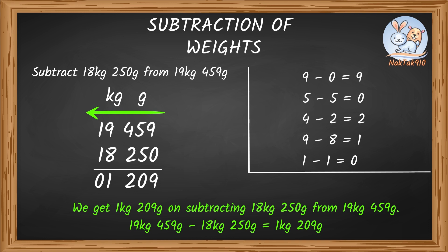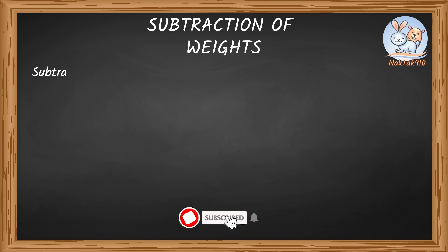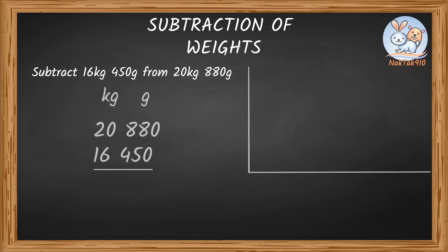Let's take another example now. Subtract 16 kg 450 grams from 20 kg 880 grams. These measurements contain mixed units with kilograms and grams. So, first step is to arrange kilogram and gram in columns one below the other.